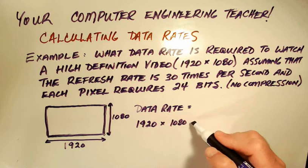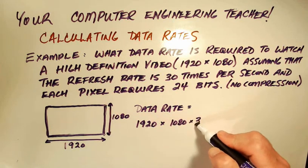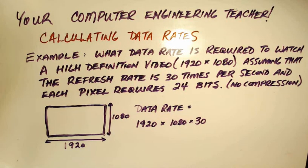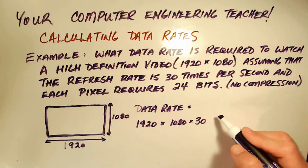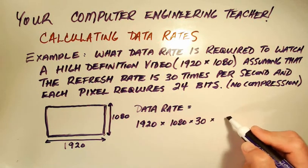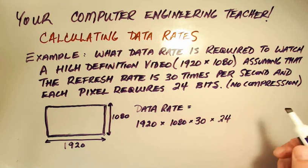Then remember that each pixel is going to take 24 bits. So we need to multiply this by 24 bits.